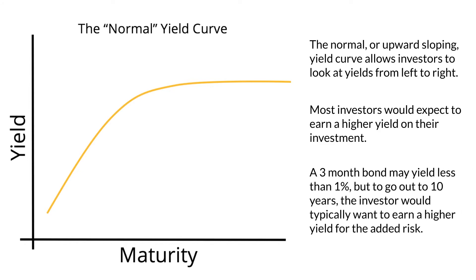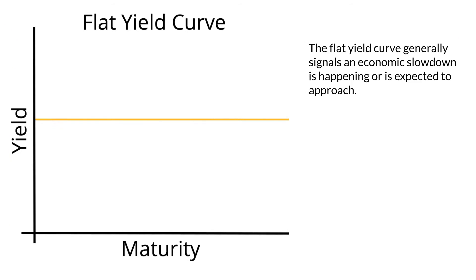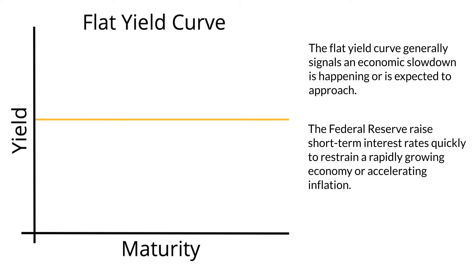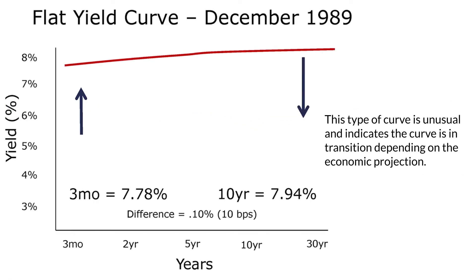A three-month bond may yield less than 1%, but to go out to 10 years, the investor would typically want to earn a higher yield for the added risk. The flat yield curve generally signals an economic slowdown is happening or expected to approach. The assumption with the flat yield curve is that the Federal Reserve will raise short-term interest rates quickly to restrain a rapidly growing economy or accelerating inflation. But investors believe the economy is slowing or inflation is controlled and expect longer-term rates to begin to fall. This type of curve is unusual and indicates the curve is in a transition to either an upward or downward sloping yield curve depending on the economic projection.